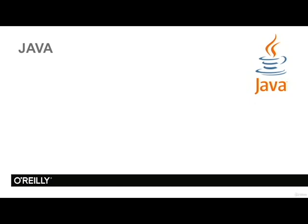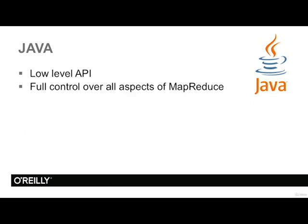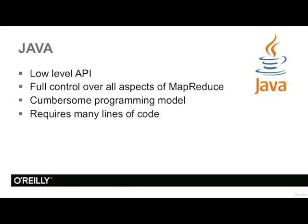Our first option is Java. Java provides a fairly low-level API, but it also gives us full control of all aspects of MapReduce because Hadoop itself is written in Java. For writing daily Hadoop tasks, you will find that the Java API is a bit cumbersome, and you typically need to write quite a bit of code to achieve even a simpler task.